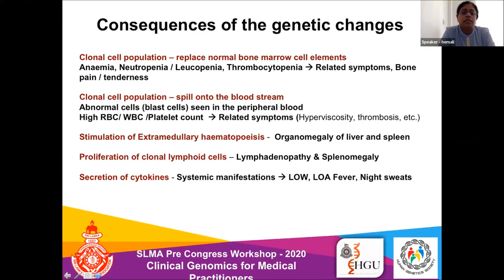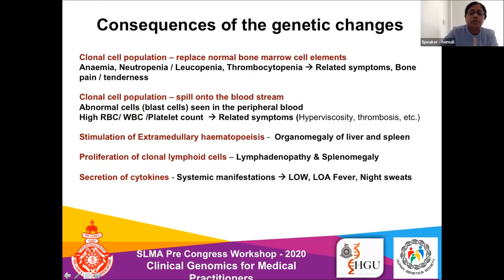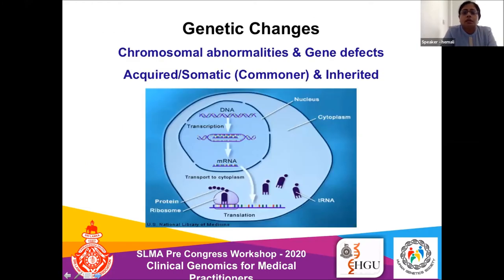These genetic changes can also stimulate extra-medullary hematopoiesis — reverting to fetal-life production of blood cells in the liver and spleen — causing organomegaly. Proliferation of clonal lymphoid cells in lymph nodes results in lymphadenopathy or splenomegaly. Abnormal cells secreting cytokines produce constitutional symptoms like fever, loss of weight, and night sweats.